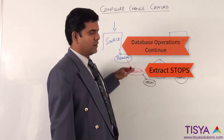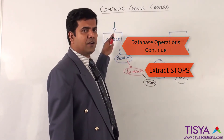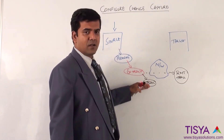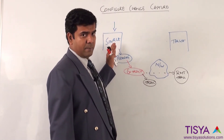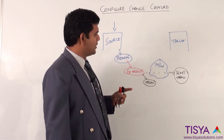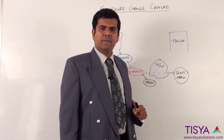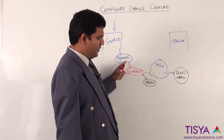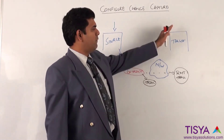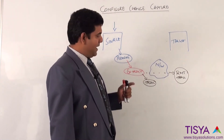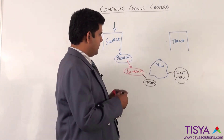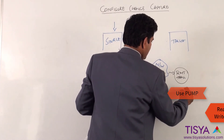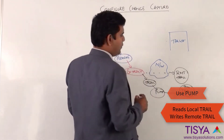If the extract stops, transactions on the source will continue to happen, so there would be a disconnect between what extract has processed and the current status of the OLTP. The recommended approach is therefore not to use a remote trail, but instead to write to a local trail so that the extract can continue to run irrespective of what is happening on the target. We can then use a pump process, which is a special extract, to write to the remote trail.